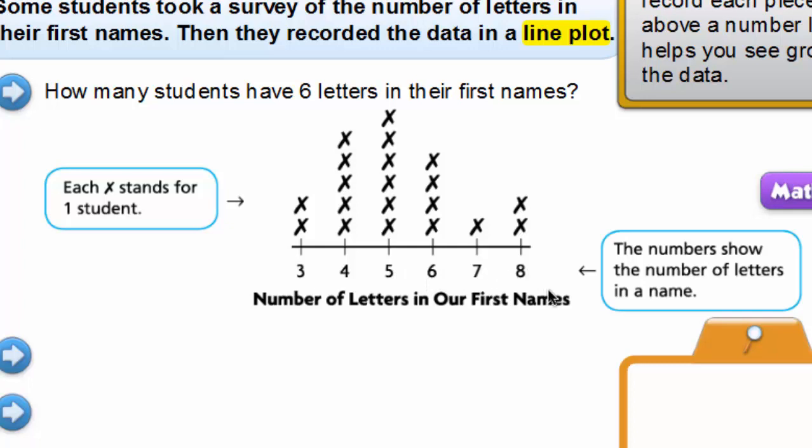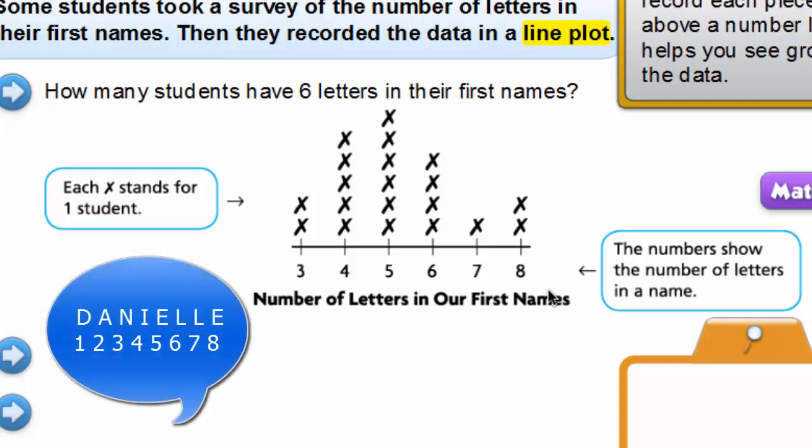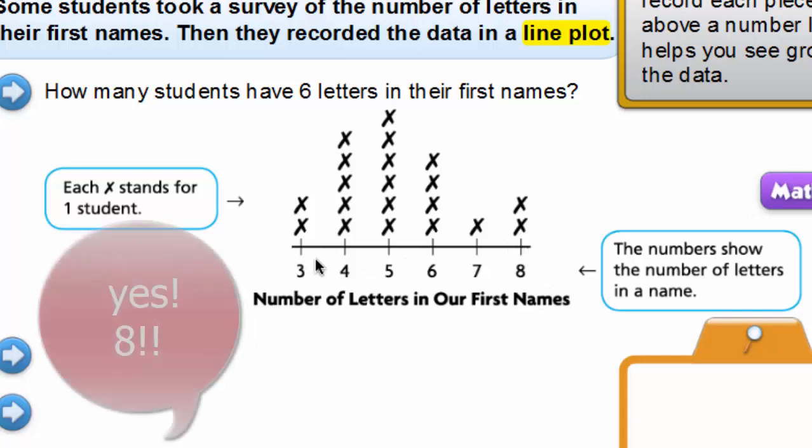So three letters in their first name, four letters, five letters, six letters, seven letters, and eight letters. How many letters are in your first name? Is your number on this number line? Mine is, mine would be right here above the eight.